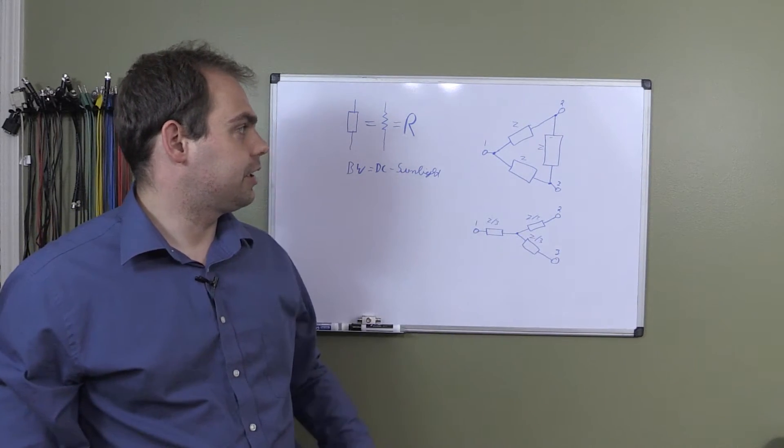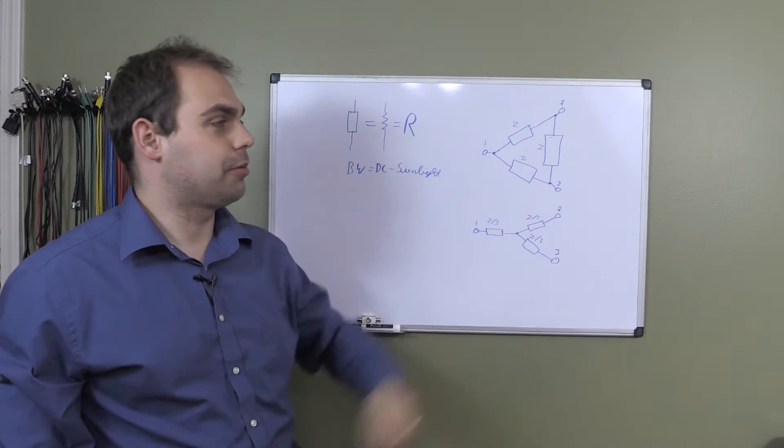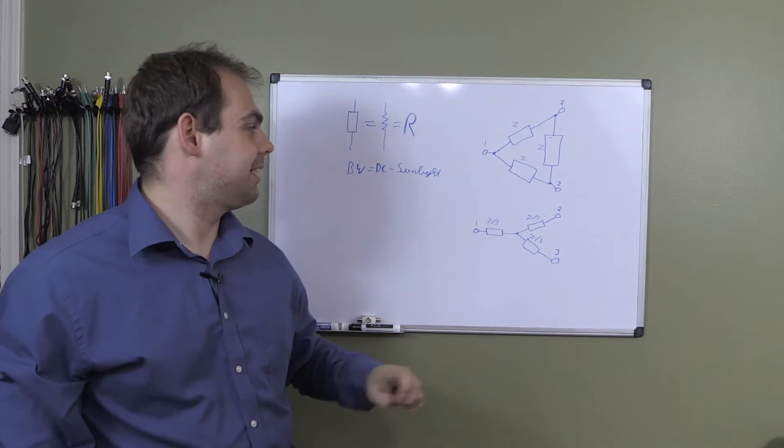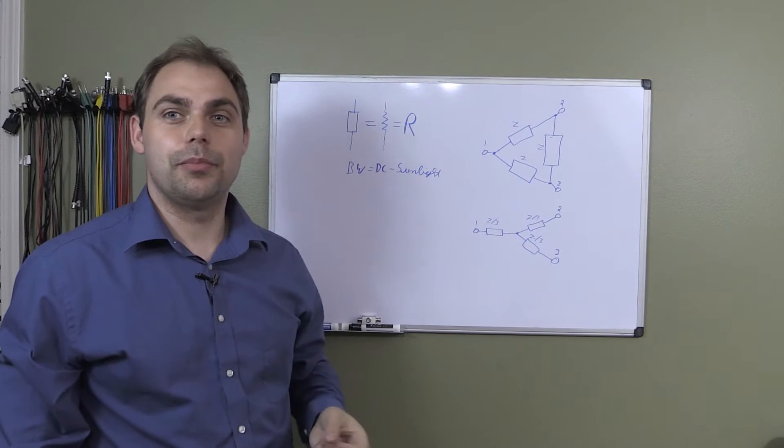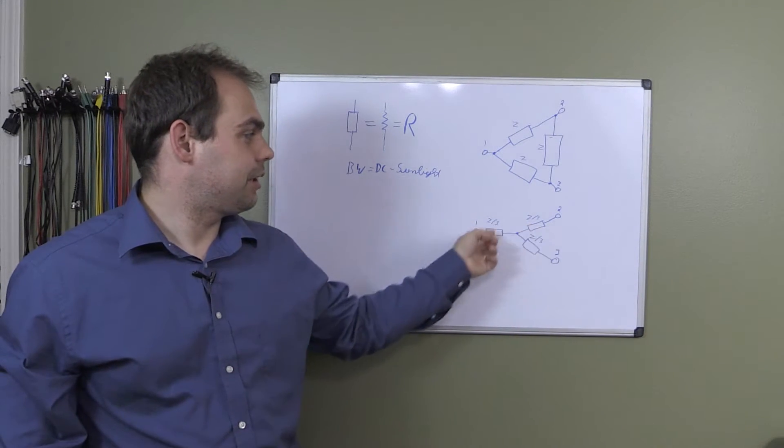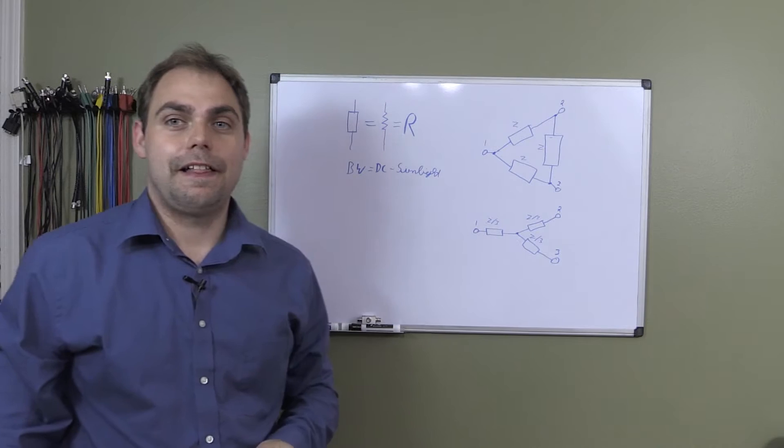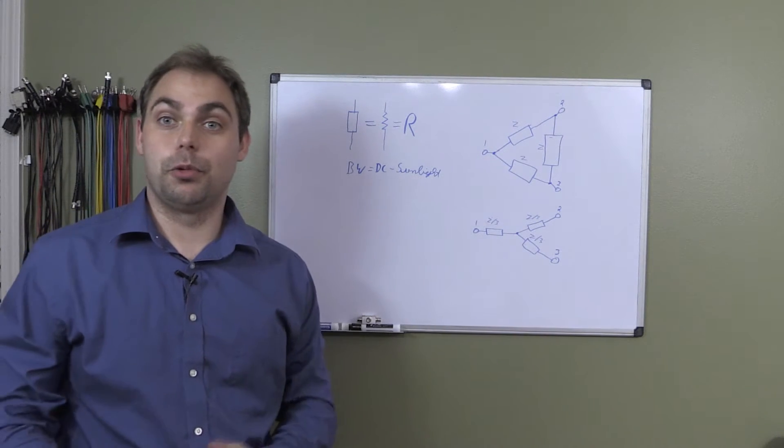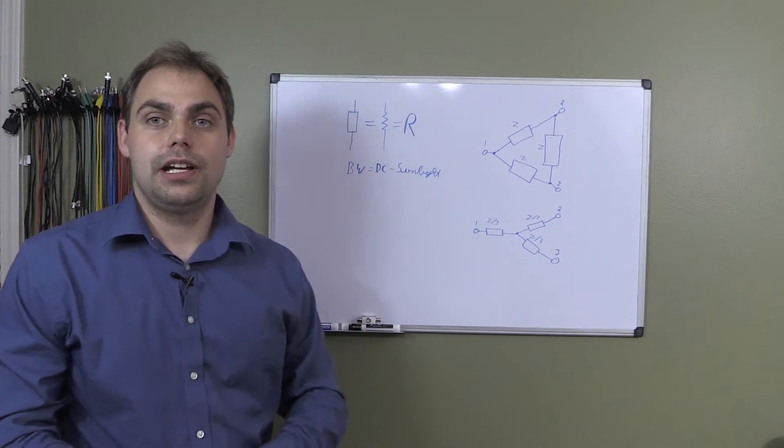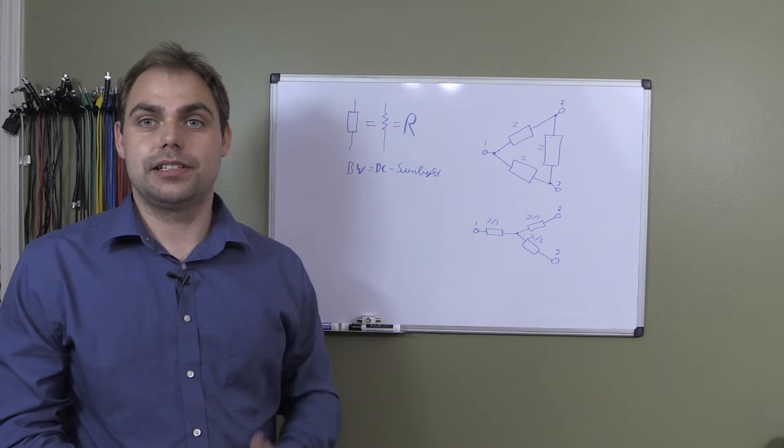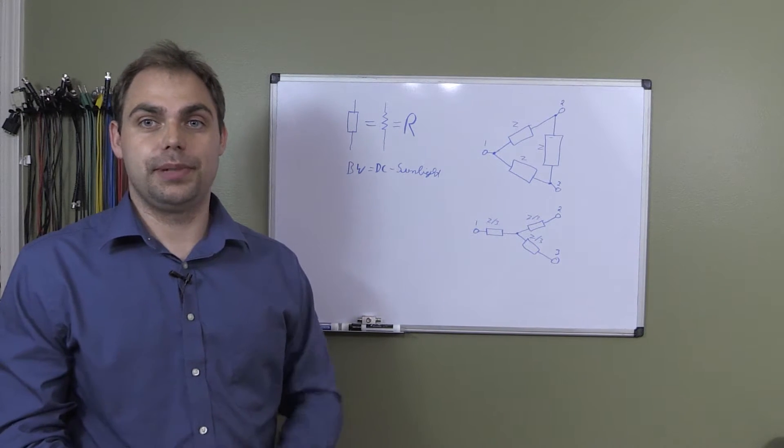Same here, just a different configuration. We have a triangle, how we would call it in Europe, or delta as Americans like to call it. And down here we have a star configuration. Those are the two options you have for resistive splitters, and that's what we're going to talk about - 6dB resistive splitters.